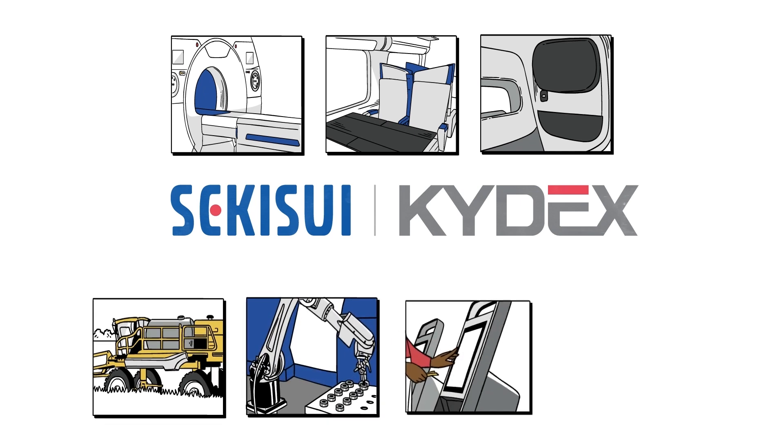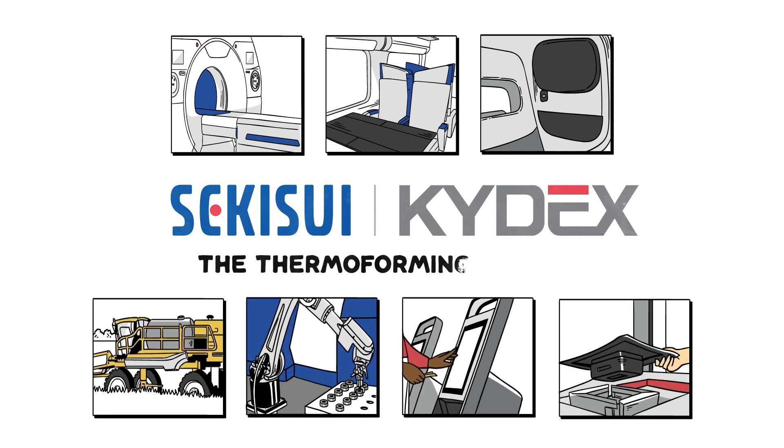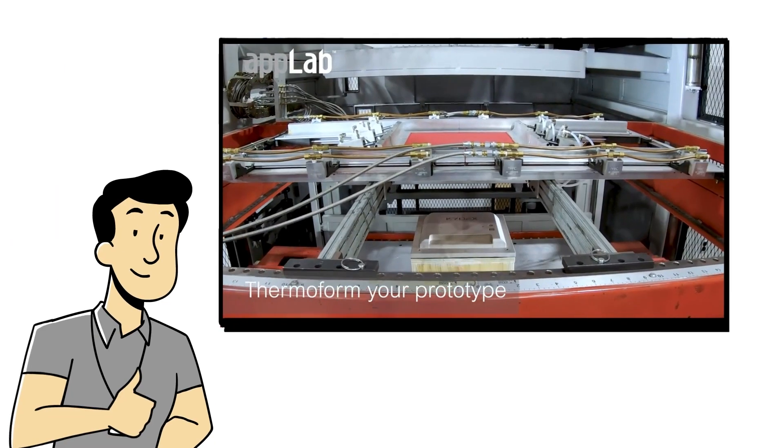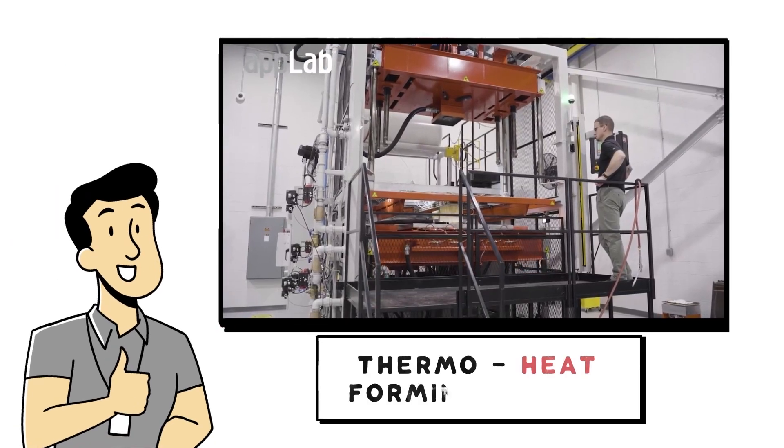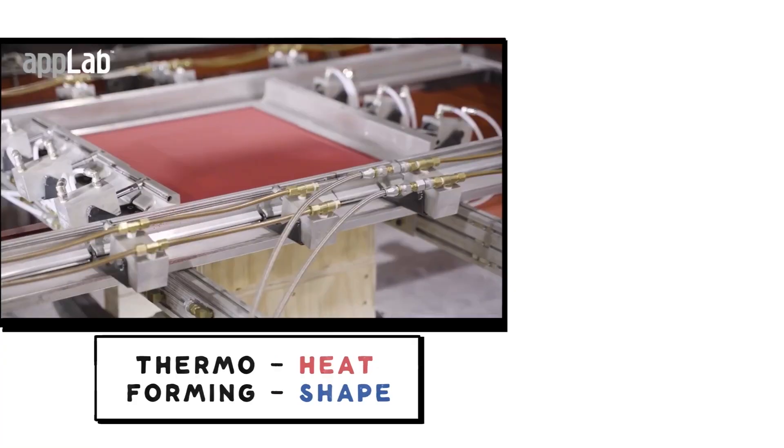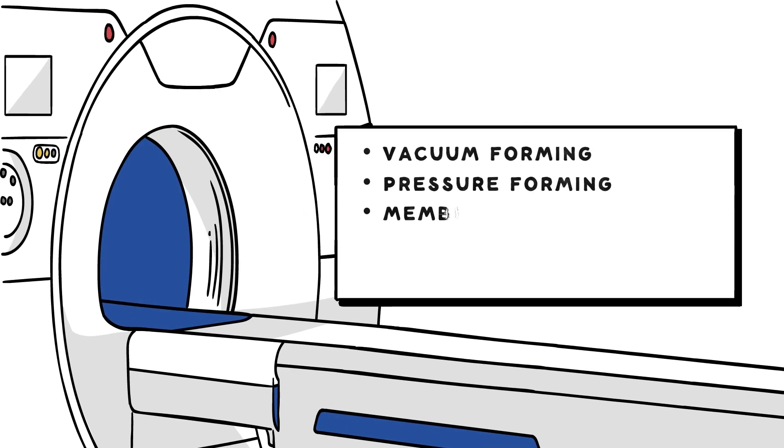When you're making custom products, it's important to select the right thermoforming process for your Kydex Thermoplastics project. Thermoforming is the process of heating and shaping thermoplastic sheets. Each process comes with its own benefits depending on the size and detail of your project.